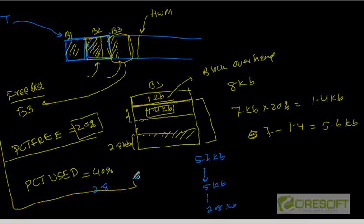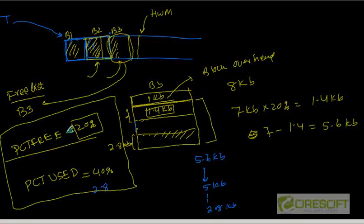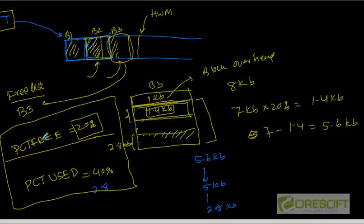So, this is the PCT-free and PCT-used concept. Depending on what kind of activity you are doing — if you are doing a lot of updates, it is recommended to have a big PCT-free. On the other hand, if you are not doing any updates on a table — like a master table that is very less likely to change — we are just going to insert new rows. In that case, if you are going to have a PCT-free of 20 percent without any updates, that means 1.4 kilobytes is just going to remain wasted forever. That area will never be used, and we are not going to do any update on that table. Therefore, this is a bad PCT-free value.